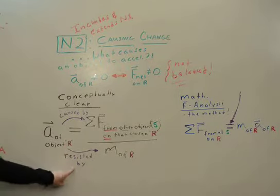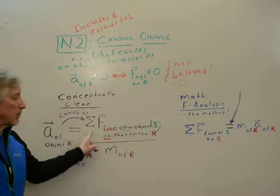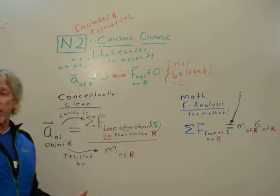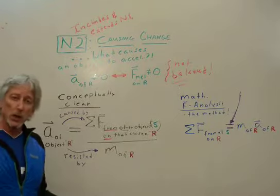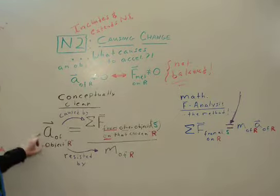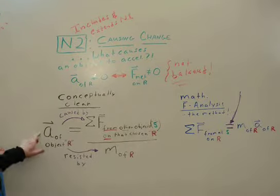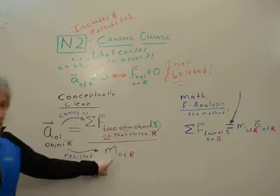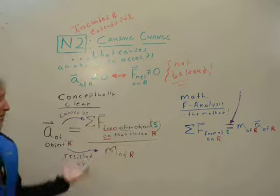But it's resisted by the mass of object R. And so if you push the same amount, net force, on a kid on roller skates, you might send them flying into a wall. If you do it on an elephant, not so much. So the effect here, you can have the same net force, but the effect, increased, decreased speed, changed direction. The effect is very different because mass resists acceleration. It's the inertia. Okay, so that's pretty clear.